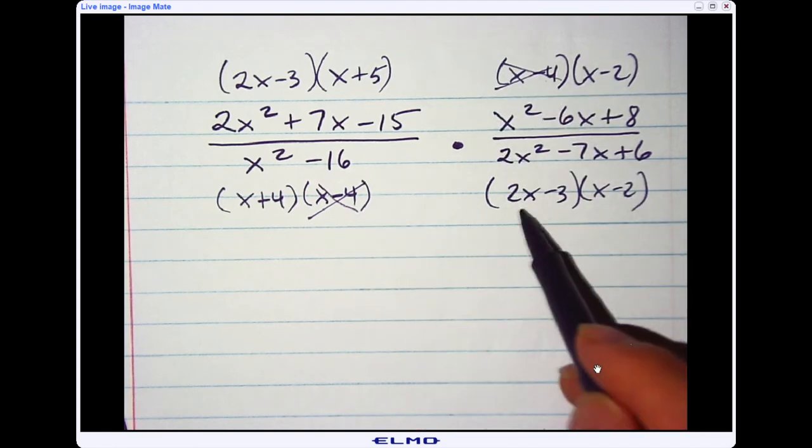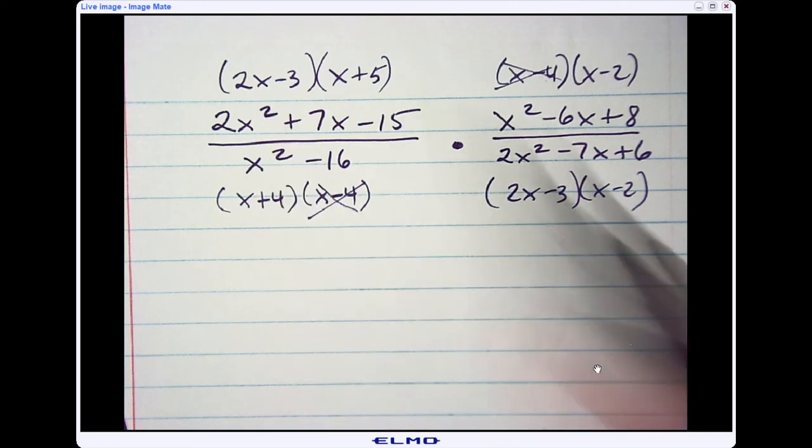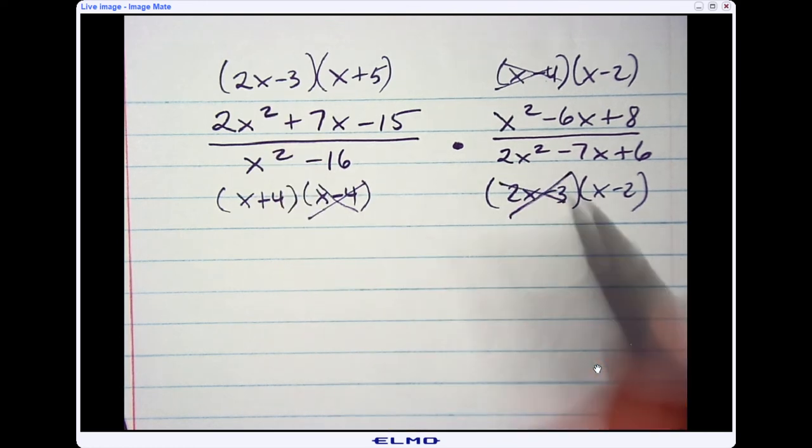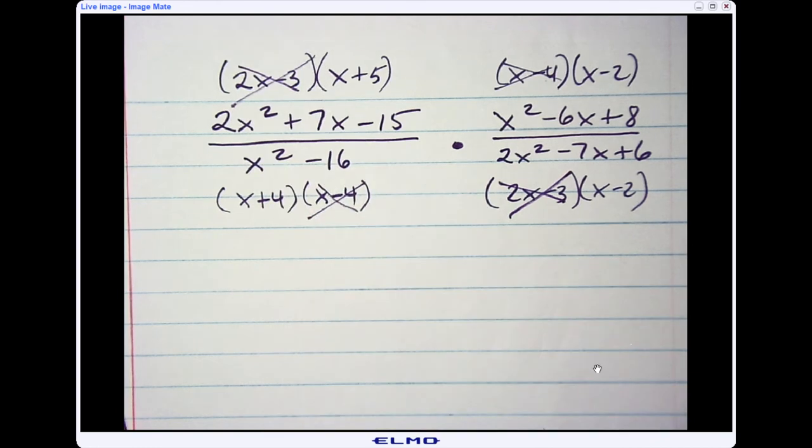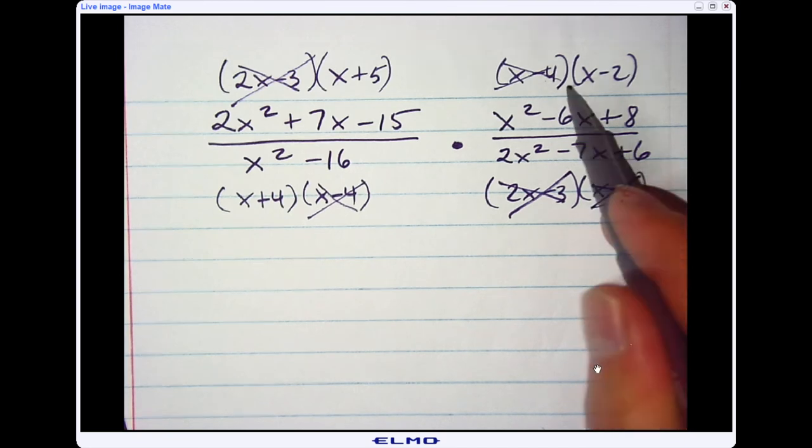So right here, you can see I have 2x minus 3 and 2x minus 3, so I can go ahead and cross those out. And if you look at this fraction, I have x minus 2 and x minus 2, which divided would be 1 as well, so I could cross those out.